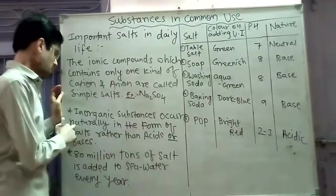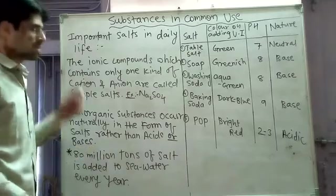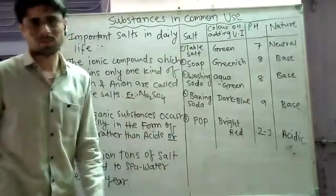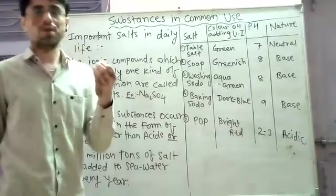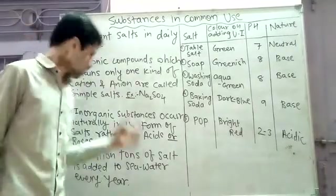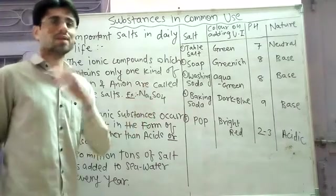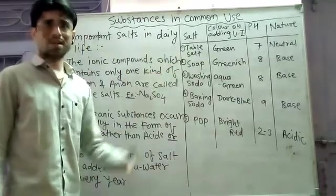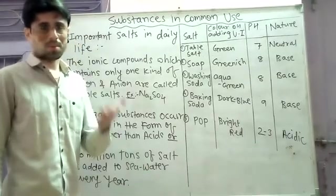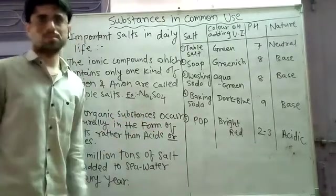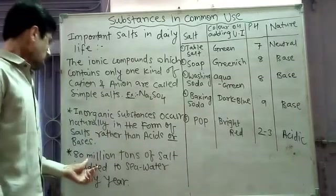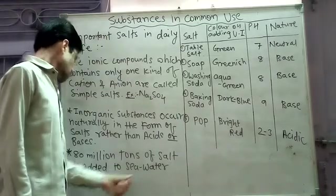Inorganic substances occur naturally in the form of salts rather than acids or bases. Inorganic substances are substances which are not derived from living animals or plants. These inorganic substances occur naturally in the form of salts. In fact, 80 million tons of salt is added to sea water every year.